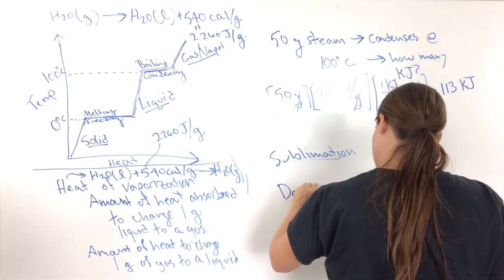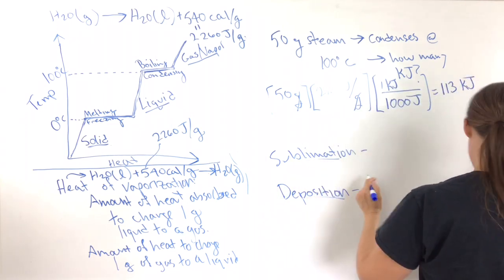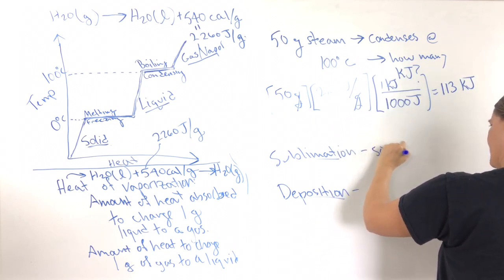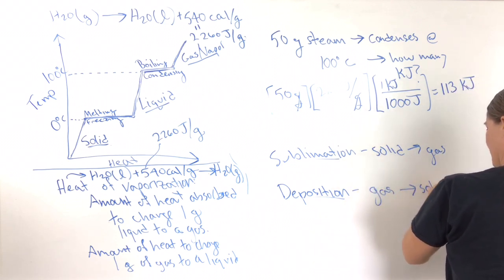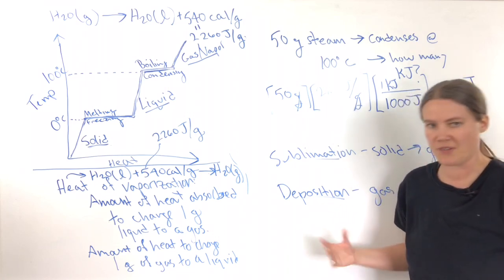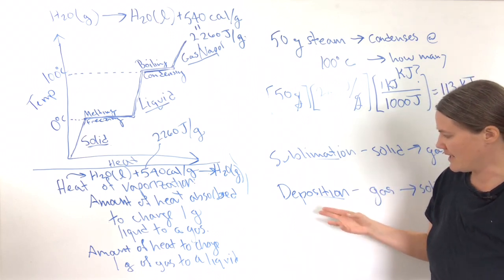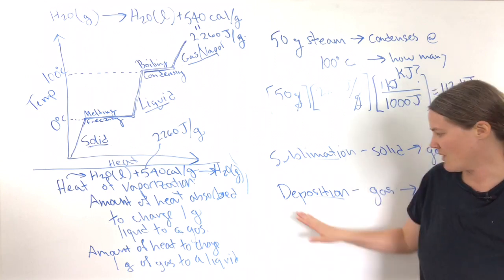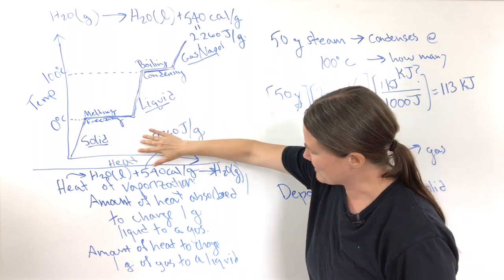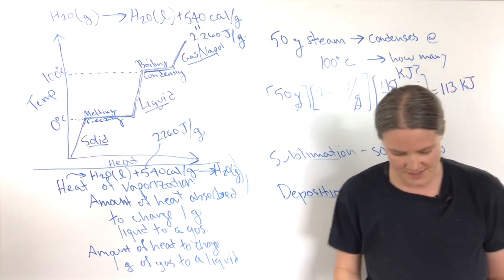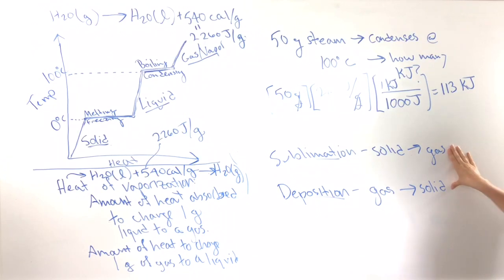Other examples of sublimation occur at high altitudes — snow can sublimate directly into water vapor. This happens because of low pressure, wind, and sunlight, which all help with the sublimation process. And then deposition — this is converting from a gas to a solid. We've all seen this happen with frost: water vapor turns into solid ice. This also happens with snow. We're not going to do any problems with these — I just wanted you to know what they were.